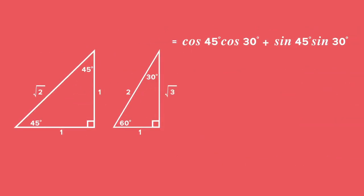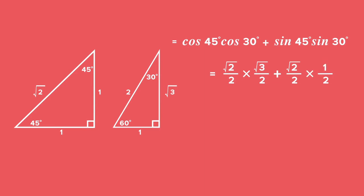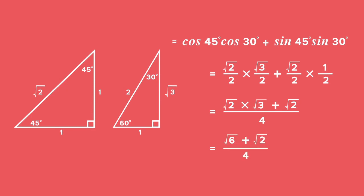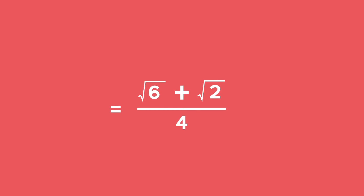Substituting special angle values in for each of the trig ratios, we get square root of 2 over 2 times square root of 3 over 2, plus square root of 2 over 2 times a half. Simplifying, we get the square root of 2 times square root of 3 plus square root of 2, all over 4. This is equal to square root of 6 plus square root of 2, all over 4. This is the simplest surd form.